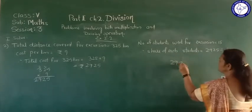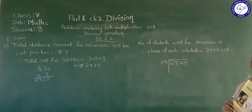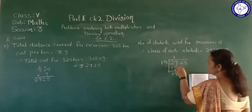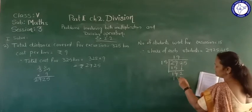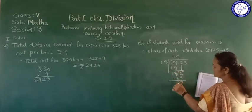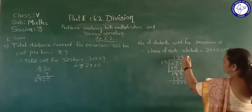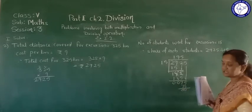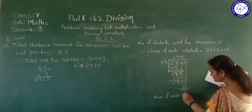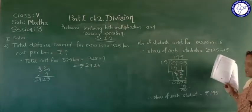Here, 2,925 divided by 15. 15 ones are 15, which is less than 29. 9 minus 5 is 4, 2 minus 1 is 1. Bring down 2 — 15 nines are 135. Make it 12, 3 minus 3 is 0, 1 minus 1 is 0. Bring down 5 — you get 75. 15 fives are 75, 75 minus 75 is 0. Share of each student is rupees 195.